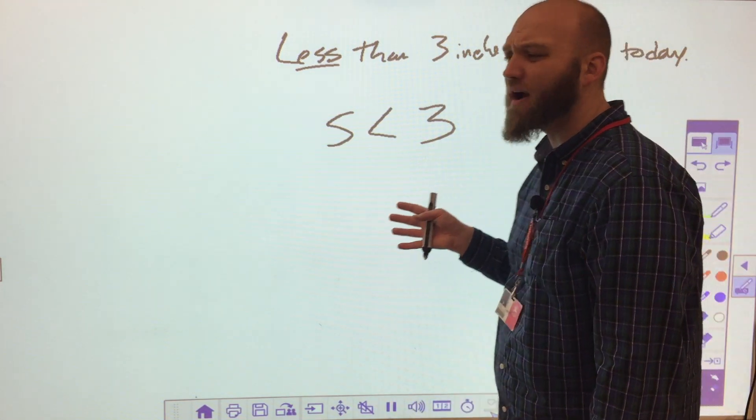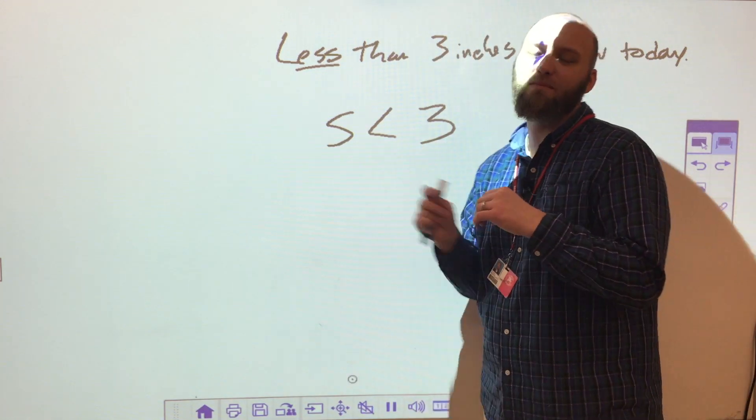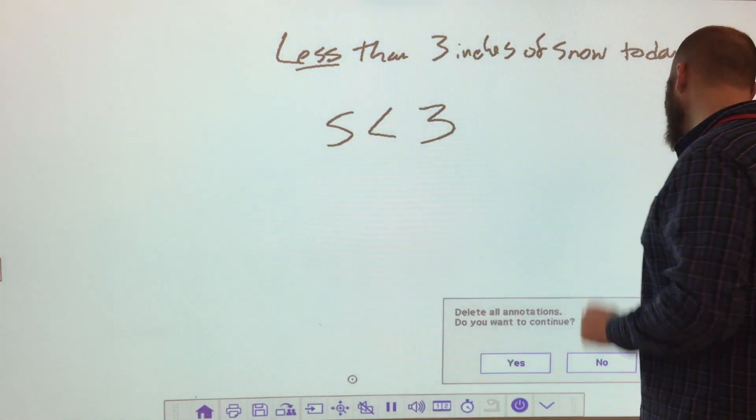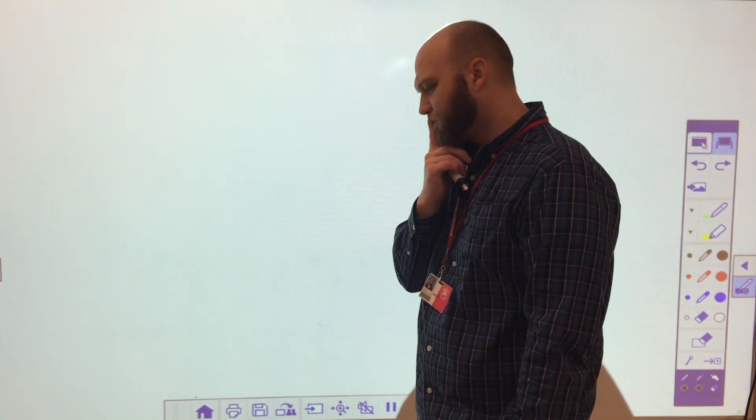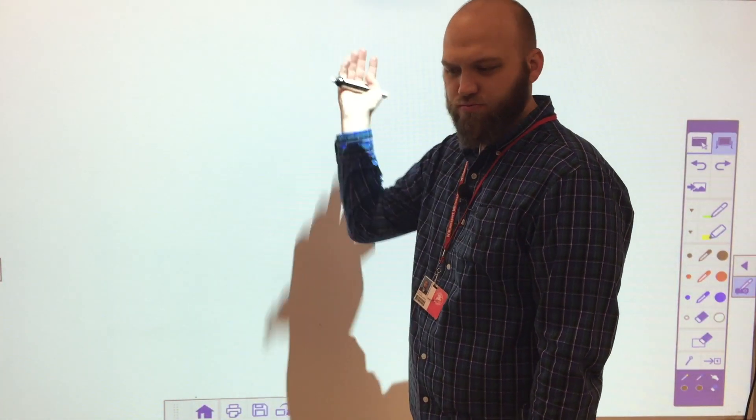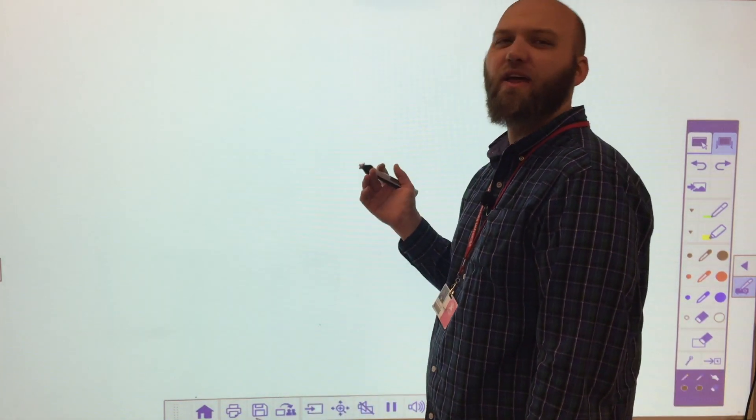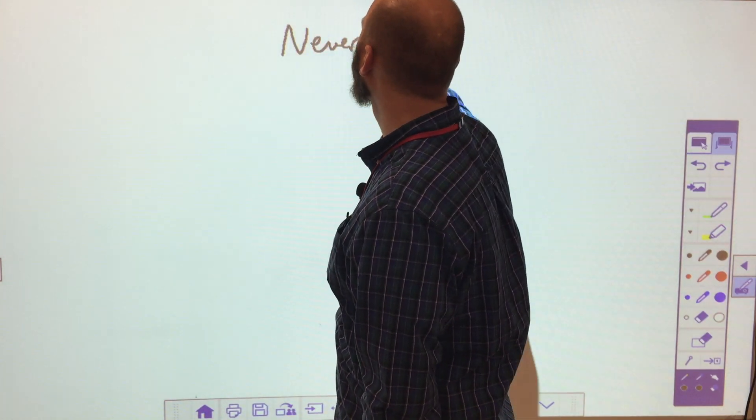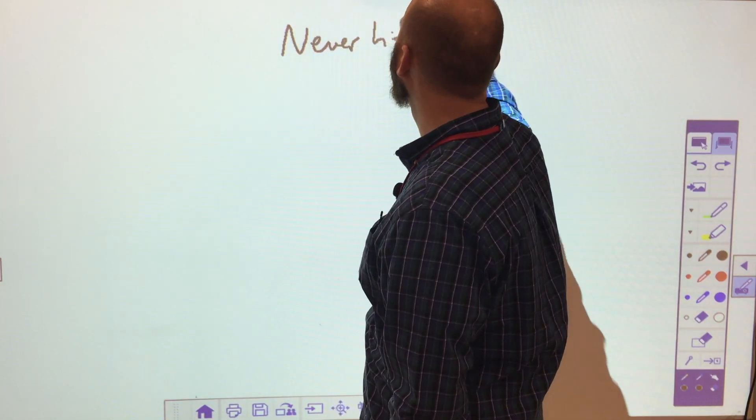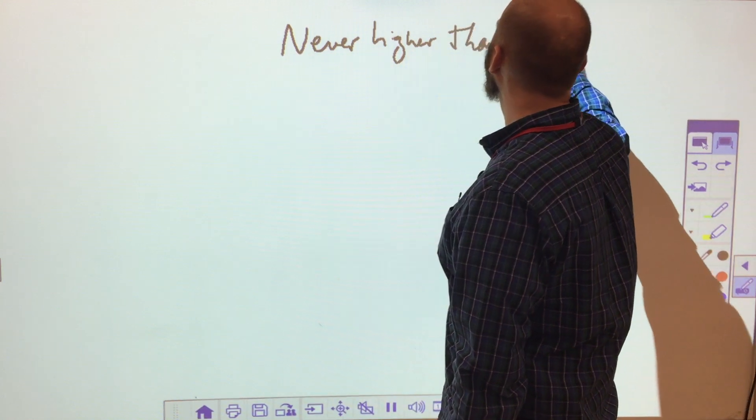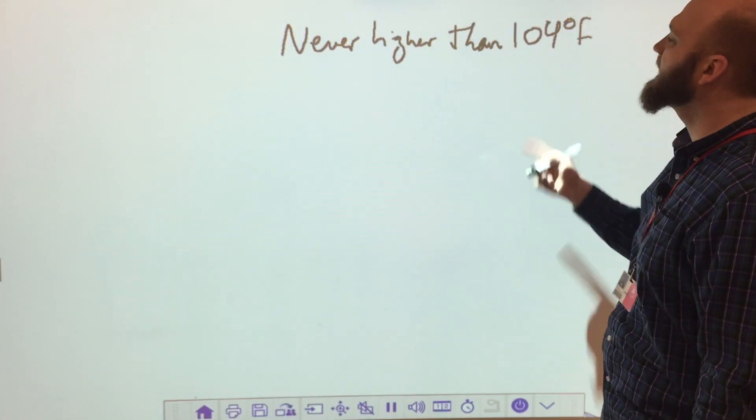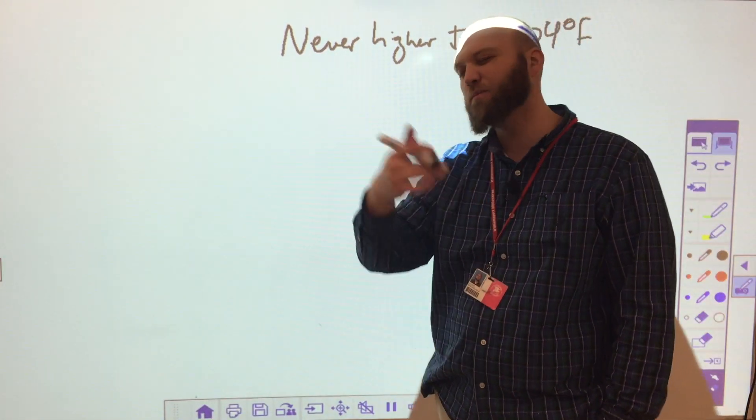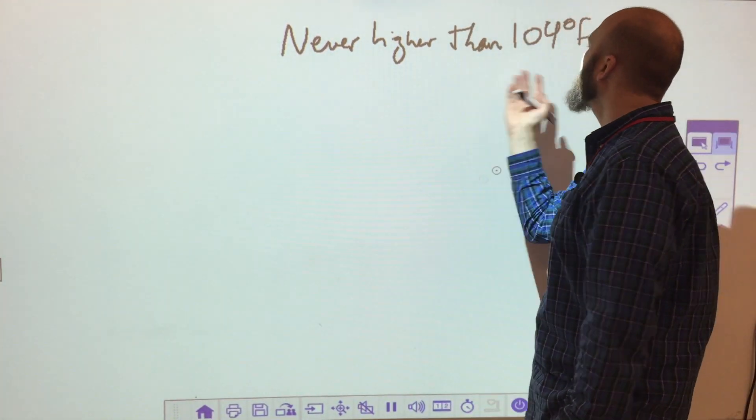When we get into graphing, the determination between whether or not 3 can be included is really, really important. So let's look at another one. If I said my temperature has never been higher than 104 degrees Fahrenheit, so never higher than 104 degrees Fahrenheit, or the highest my temperature has ever been is 104 degrees Fahrenheit, whichever one I wanted to do.